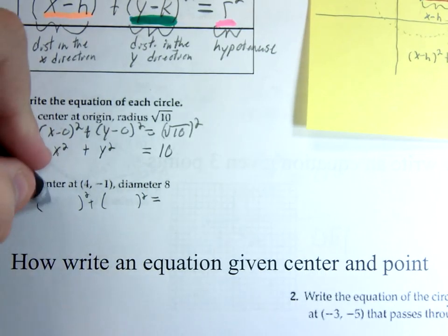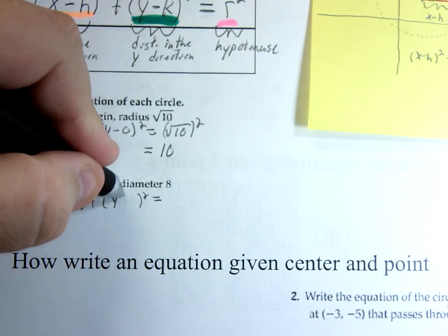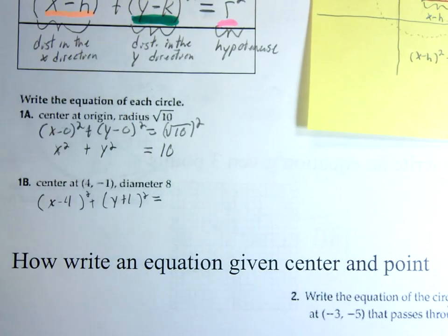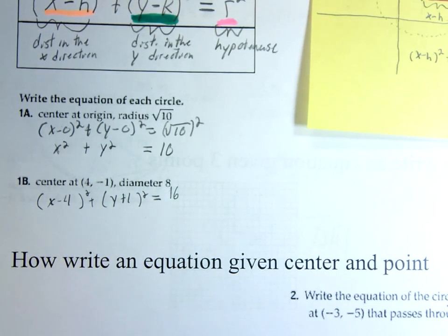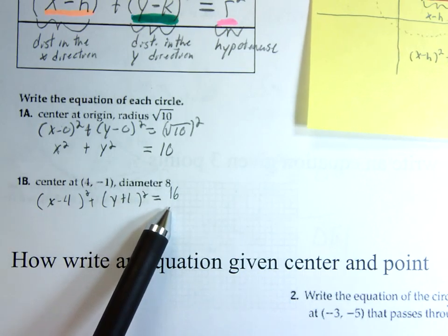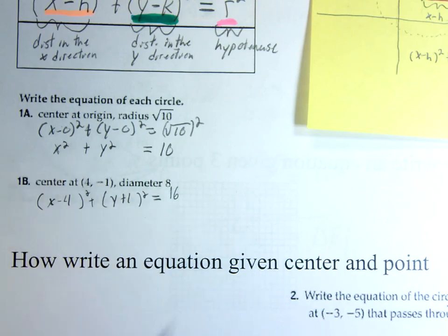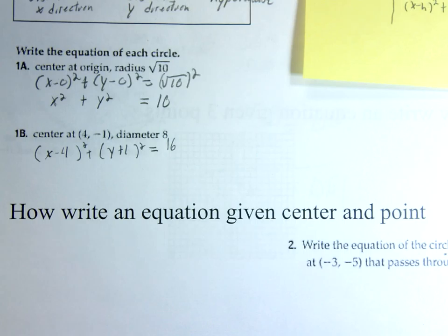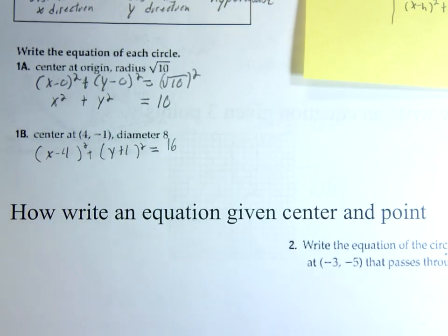X minus 4 squared plus Y plus 1 equals 16. Why is it 16 and not 64? Can I make a confession? The first time I did this I totally put 8 squared in here. And I was the one who wrote the problem. I fell for my own trap. Shame on me. This should be 4 because the diameter is 8, so the radius we need is 4. All right, we're ready for the next piece.